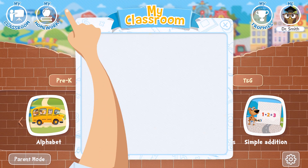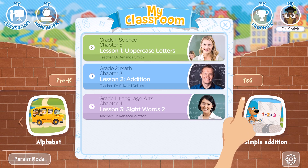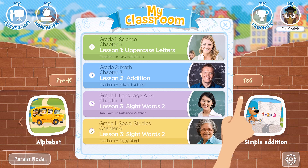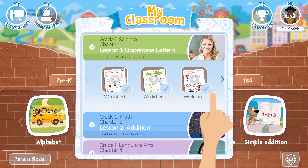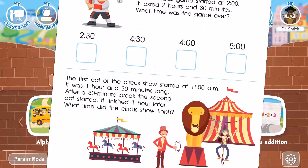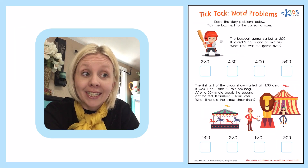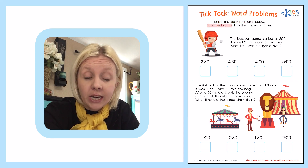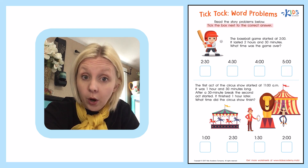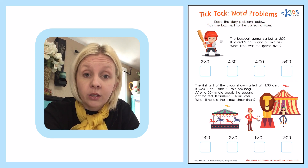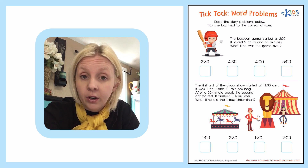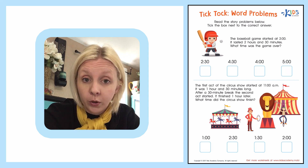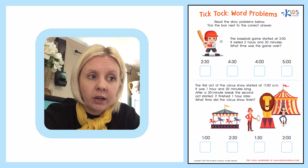Let's open the worksheet. So we have TikTok word problems. Read the story problems below and tick the box next to the correct answer. Story problems or word problems let us know that we have to read a story, but there's something that we have to do with the numbers — a mathematical equation inside.